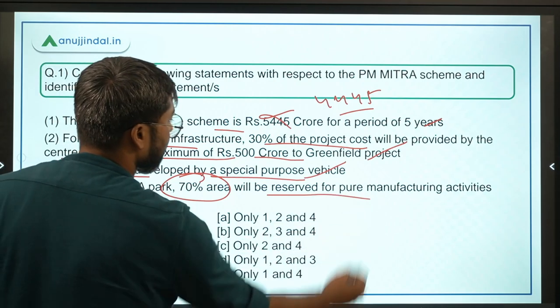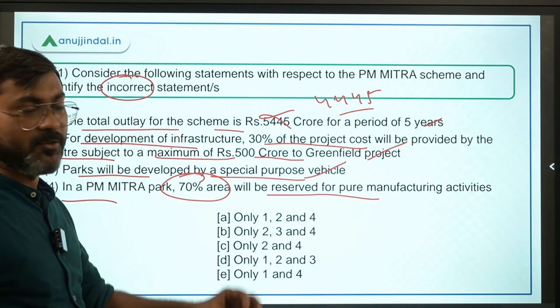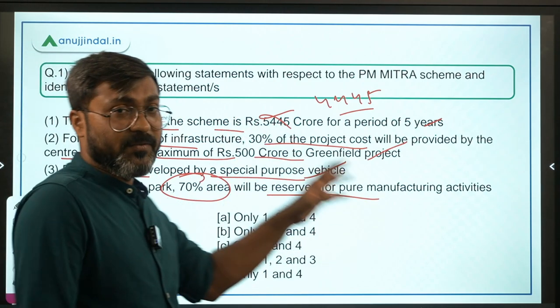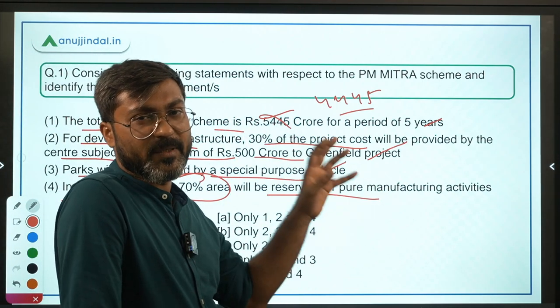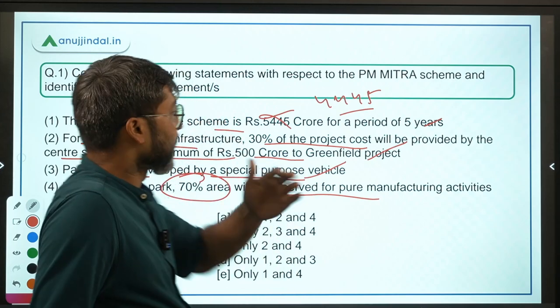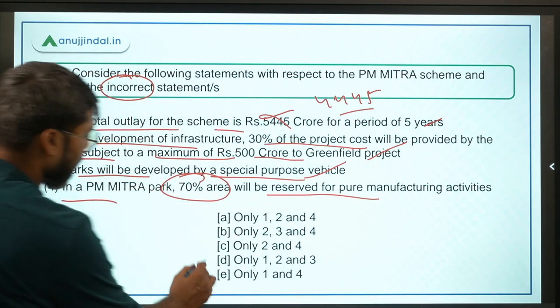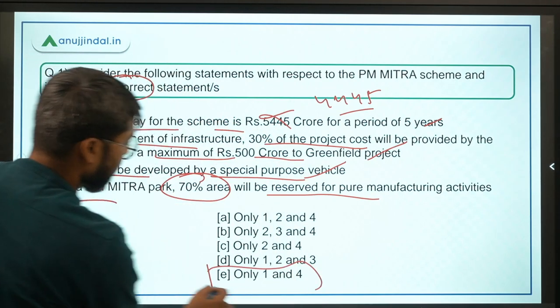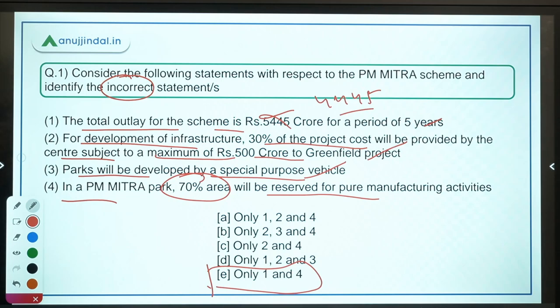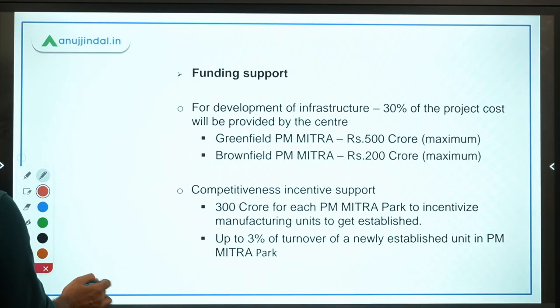In a PM MITRA park, 70% area will be reserved for pure manufacturing activities — that is incorrect; it is 50%. So statements 1 and 4 are incorrect, making option E the correct answer. I hope this question is clear. Moving ahead to question number 2, which is once again a very important question regarding a scheme.